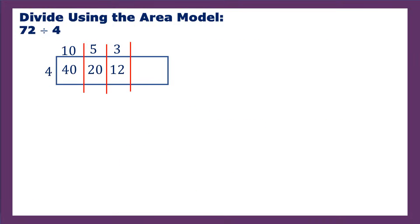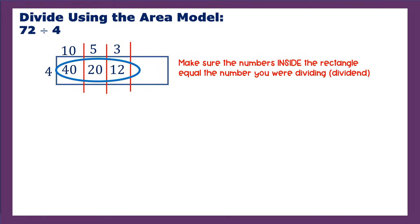Let's get ourselves some clean space. Now you do want to make sure the numbers inside the rectangle equal the number you were dividing, right, the dividend, the bigger number. So do 40 plus 20 plus 12 equal 72? And they do. Now this won't always be the case. You might have a problem with a remainder. And so you could have a remainder and use the area model to solve it. In this case, it divides evenly. So we're lucky. It equals 72.